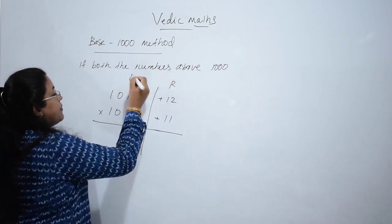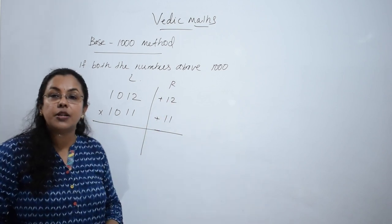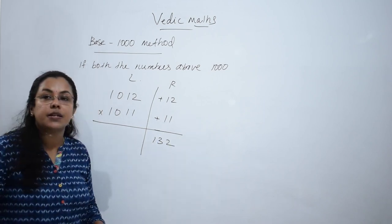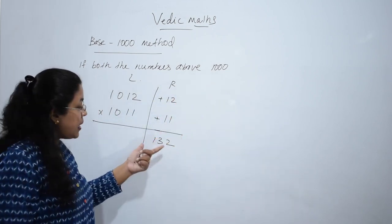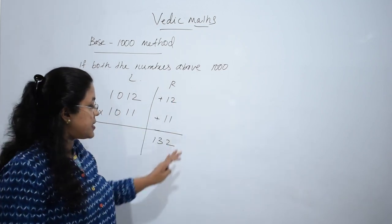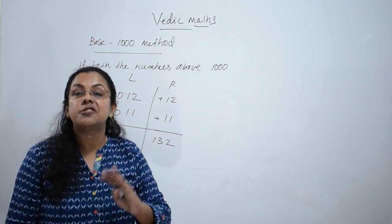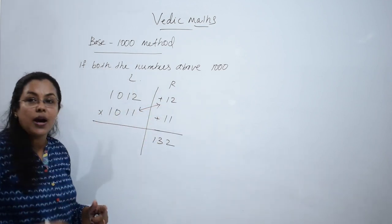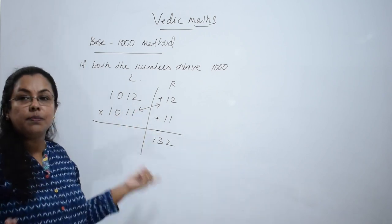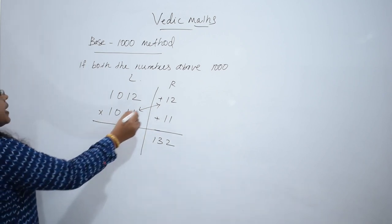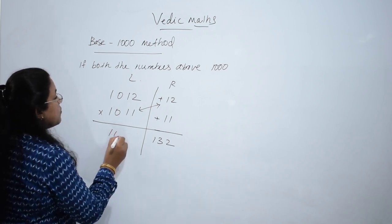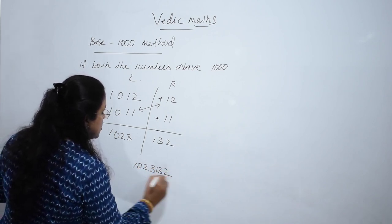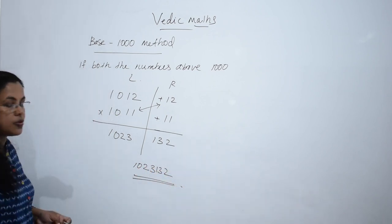This is the right side and this is the left side. Multiply at the right side: 12 into 11, the multiplication is 132. Since it is base 1000, there must be 3 digits in the right hand side. Now add diagonally, either this or this, the method is same. 1011 plus 12 is 1023. So what is our final answer? 1023132.